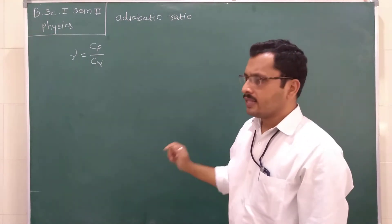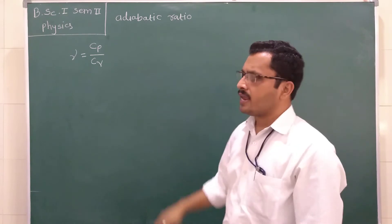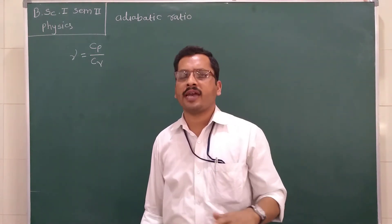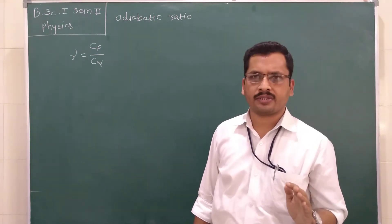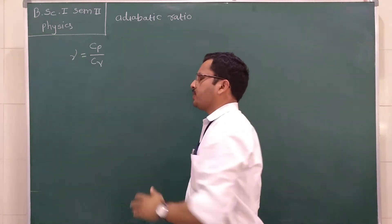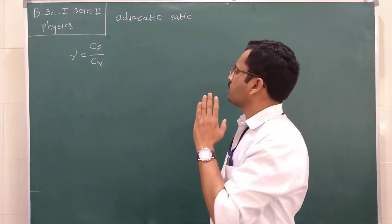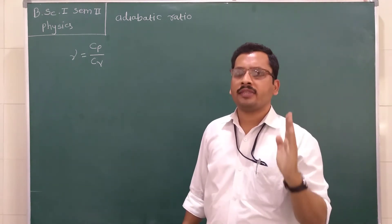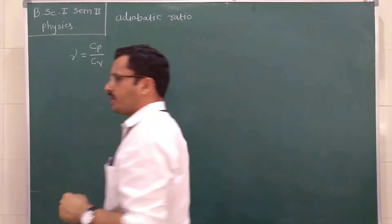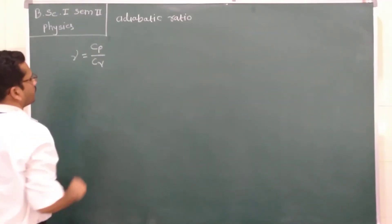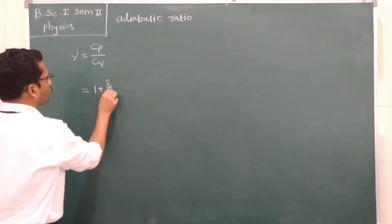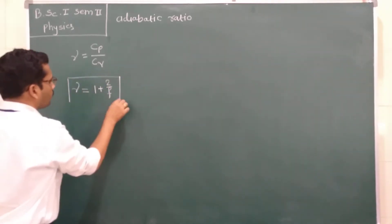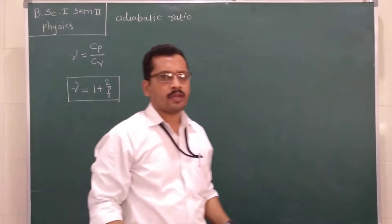Now in this lecture, we apply this adiabatic ratio for different types of gases — monoatomic gas, diatomic gas, and triatomic gas. We also verify this adiabatic ratio using the equation derived in the last lecture, which states that if the degree of freedom is equal to F, then the adiabatic ratio is equal to 1 plus 2 by F.